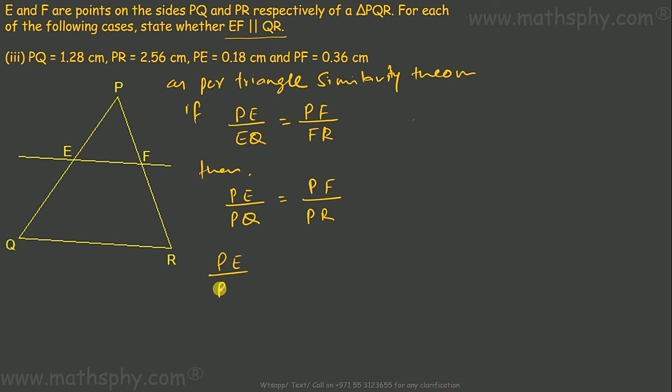PE over PQ, so PE over PQ is, PE is 0.18, PQ is 1.28. PF over PR, PF is 0.36 and PR is 2.56. So let's leave this as it is.